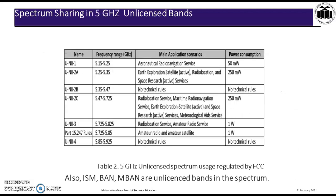The spectrum sharing in the 5 GHz unlicensed band includes various applications: at frequencies above 5 GHz, applications include aeronautical radio navigation services, satellite use, amateur radio science, and meteorological aid services. Additionally, BAN (Body Area Network) and MBAN (Medical Body Area Network) are examples of unlicensed bands.